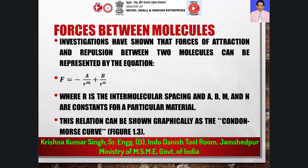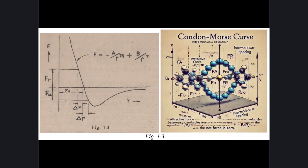Investigations have shown that the forces of attraction and repulsion between two molecules can be mathematically represented by the equation: F equals minus (a / r^m) plus (b / r^n), where r is the intermolecular spacing and a, b, m, and n are constants specific to the material. This equation is often depicted graphically as the Condon-Morse curve. Looking at figure 1.3, this graph shows how the forces of attraction and repulsion change with intermolecular spacing. The point where the net force is zero corresponds to a state of stable equilibrium, where the molecules are spaced at r zero.